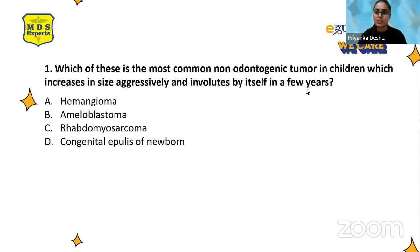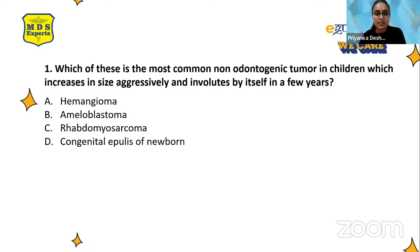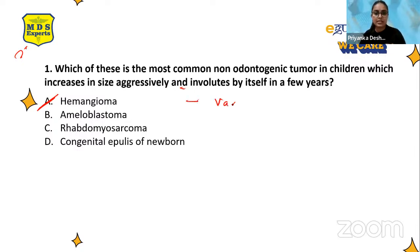The first question: which of these is the most common non-odontogenic tumor in children, which increases in size aggressively and involutes by itself in a few years? The options were hemangioma, ameloblastoma, rhabdomyosarcoma, and congenital epulis of the newborn. The correct answer is hemangioma, because hemangioma is basically a vascular anomaly.